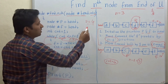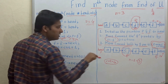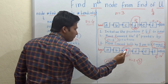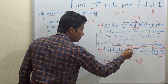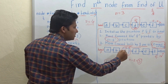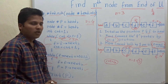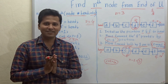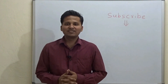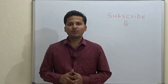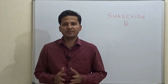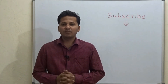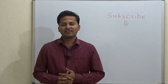Let's verify: our n is 4, so is it the fourth node from the end? Yes — 1, 2, 3, and 4. So this is the fourth node from the end and this is our answer. This is how we find the nth node from the end of the linked list. Please subscribe to my channel as I post algorithm videos every day, and if you want a video on any particular topic, please mention it in the comments below. Thank you.